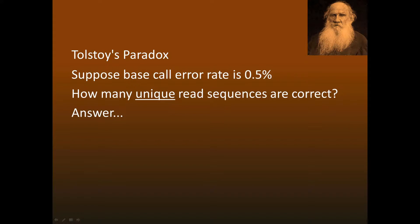Suppose the base call error rate is about 0.5%, which is typical for Illumina after stringent quality filtering. How many of the sequences in the reads are correct? Here we are counting unique sequences, so if the same sequence appears several times, we count it only once. The surprising answer is only around 2%.